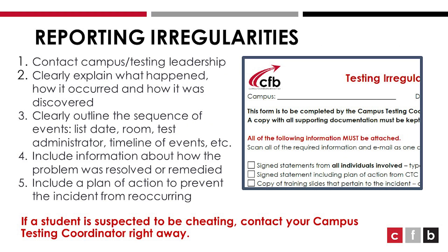Taking a look at reporting irregularities, this system of procedures allows proper investigation of incidences and maintains testing validity and confidence. If a student is suspected to be cheating, contact your campus testing coordinator right away, as they will have to follow these steps for each administration.